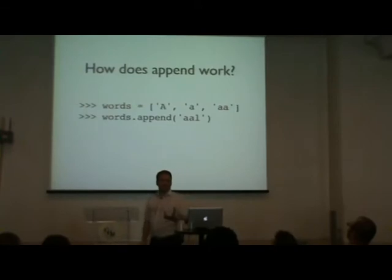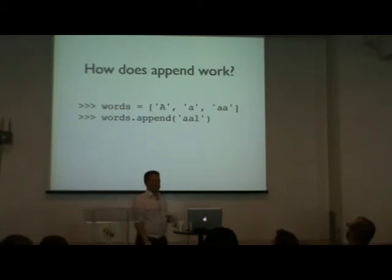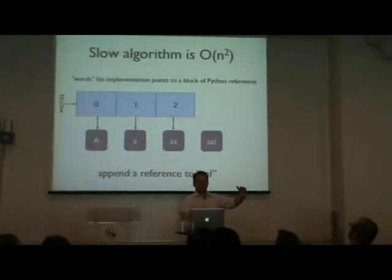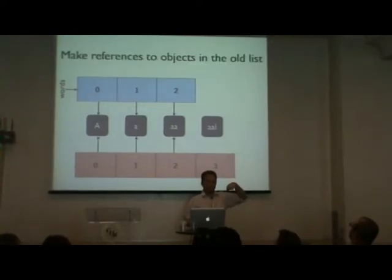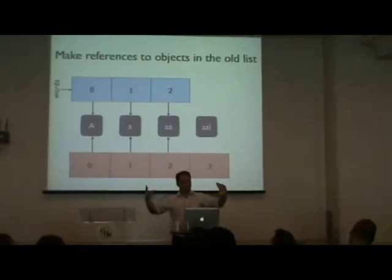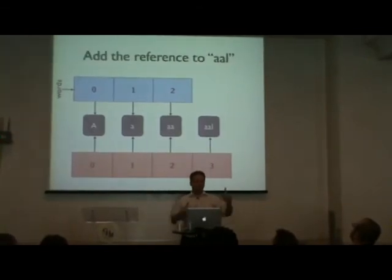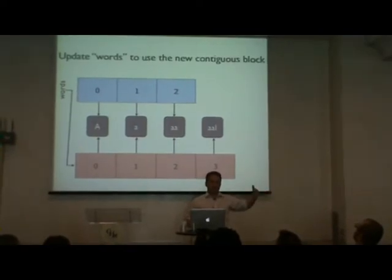The question is: how does append work? Append has three elements. You make a new list of the old size plus one, copy all the references from the old list to the new contiguous block, make a reference for the new thing you want to add, and then deallocate the old data. Now you have a list of size four instead of three.